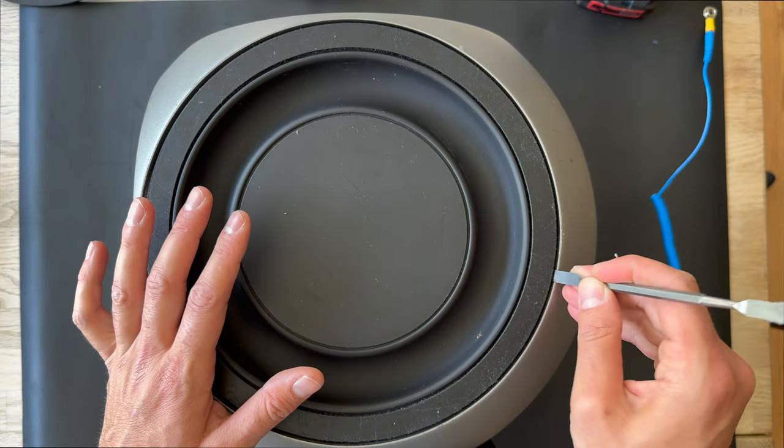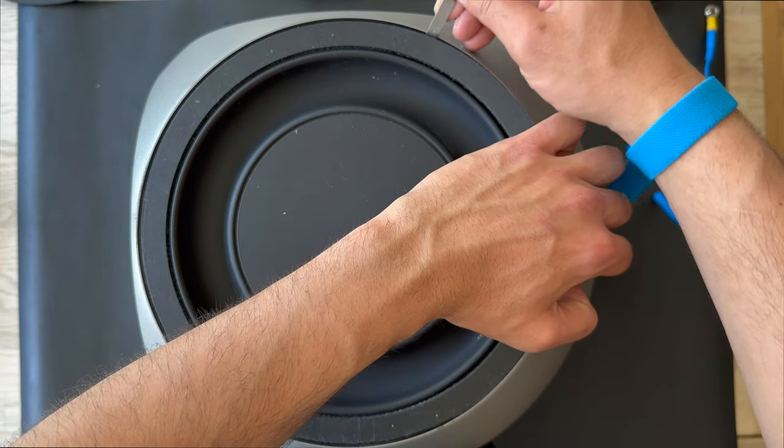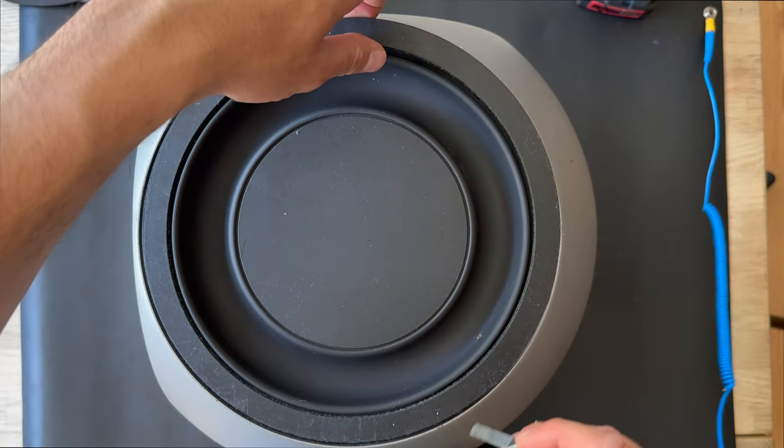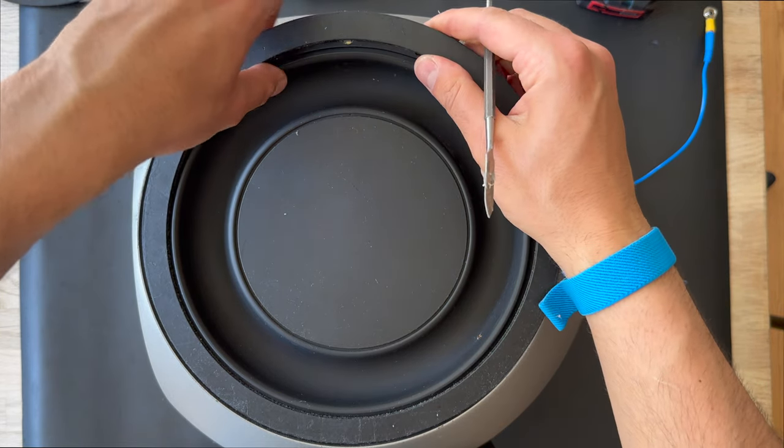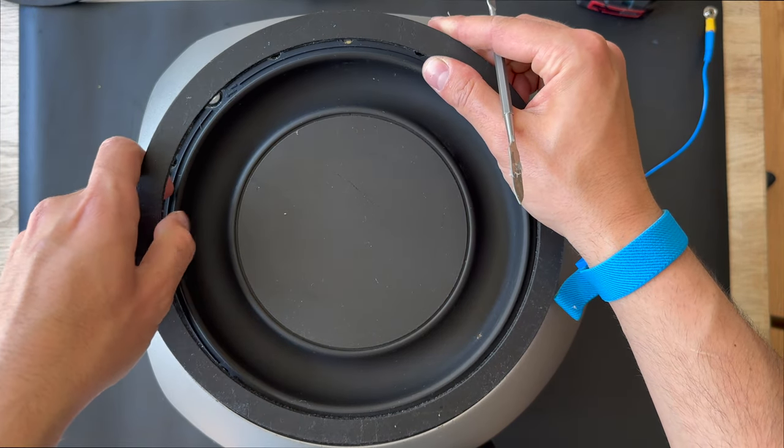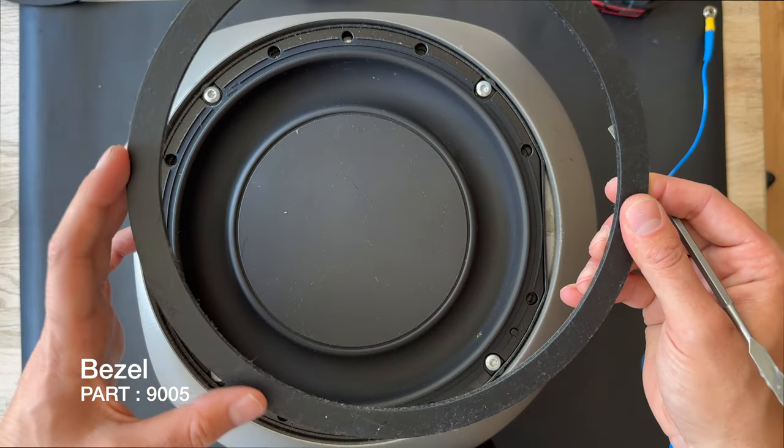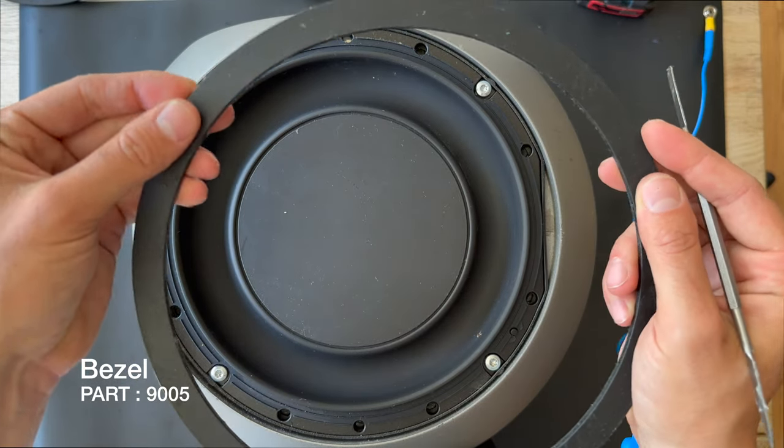Same method. Just take a credit card or a flat screwdriver, whatever you have at home, and actually you can also paint these bezel rings. Over the years, the paint is getting sticky. It's like the BeoLab 2 and the BeoLab 4. The materials are very sticky.